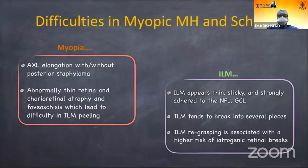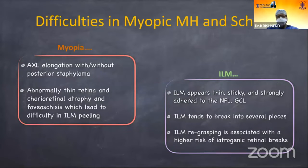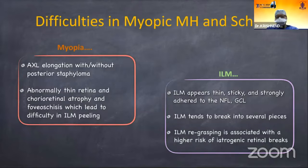The difficulty of myopic macular hole and schisis lies in the length of the eyeball — it is very difficult to approach the posterior pole due to the elongated eye. Abnormally thin retina and chorioretinal atrophy make viewing and peeling the ILM very difficult. ILM is very sticky and strongly adherent to the underlying retinal structure, often coming out in bits and pieces, and ILM peeling can cause iatrogenic retinal break formation in myopic patients.